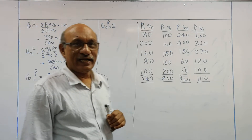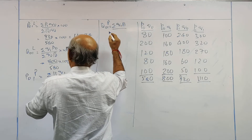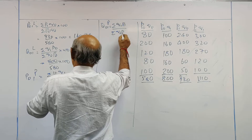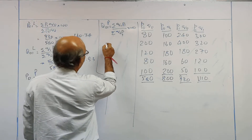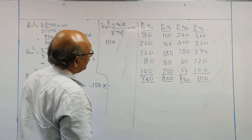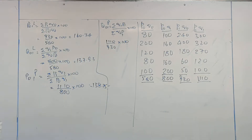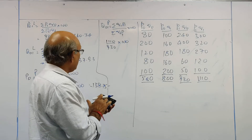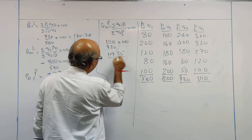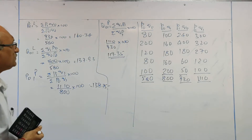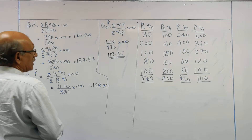Price index number by Paasche's I calculated. Now let's go to quantity index number by Paasche's. This is equal to summation of Q1P1 divided by summation of Q0P1 into 100. Simply interchange P as Q and Q as P. P1Q1 total is 1110. P1Q0 total is 930, into 100. So this is equal to 1110 divided by 930 into 100, which is equal to 119.35. This is the quantity index number by Paasche's.